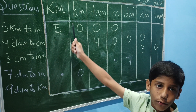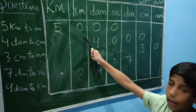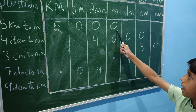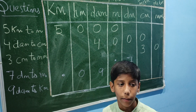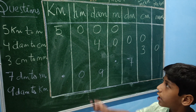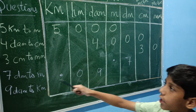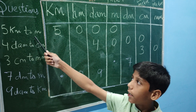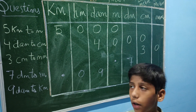So we will write 5 in kilometer and multiply by 10, multiply by 10, multiply by 10 — that gives us 1000. Now we multiply 5 by 1000, so the answer is 5000. So 5 kilometer to meter is 5000.